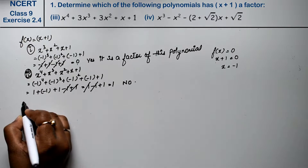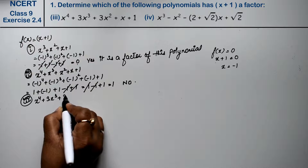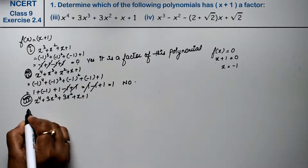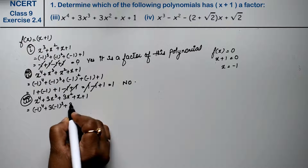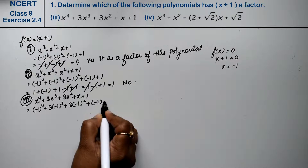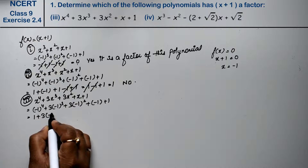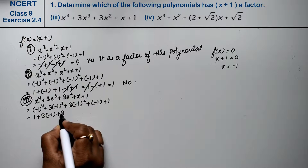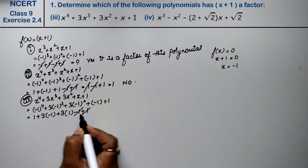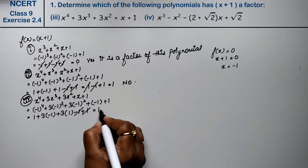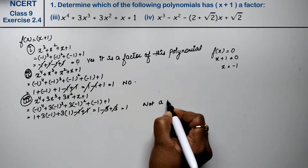Third part: f(x) = x⁴ + 3x³ + 3x² + x + 1. Substituting x = -1: (-1)⁴ + 3(-1)³ + 3(-1)² + (-1) + 1. Even power gives +1, odd power gives -1. So: 1 - 3 + 3 - 1 + 1 = 1. Since the result is 1, not 0, hence (x+1) is not a factor of this polynomial.